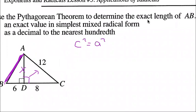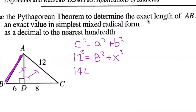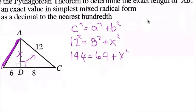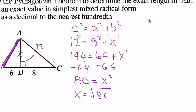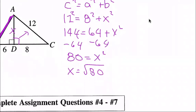Starting with the triangle with sides 12 and 8: c squared equals a squared plus b squared, so 12 squared equals 8 squared plus x squared. That gives 144 equals 64 plus x squared. Subtracting 64 from both sides: 80 equals x squared, so x equals the square root of 80. Simplifying: the square root of 80 equals the square root of 16 times 5, which equals the square root of 16 times the square root of 5, which equals 4 square root 5.